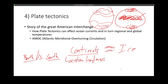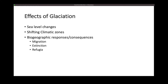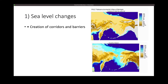Now that we're done with the causes of glaciation, what are the effects? We have three major effects: first is sea level changes, next is shifting climatic zones, and third is the effects of glaciation on animals and plants — the biogeographic responses, mainly migration, extinction, and refugia. The most obvious effect of glaciation is sea level changes.